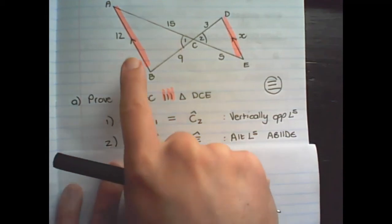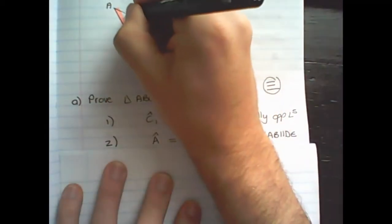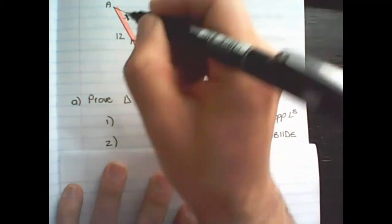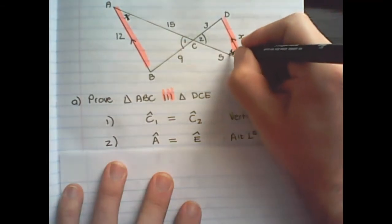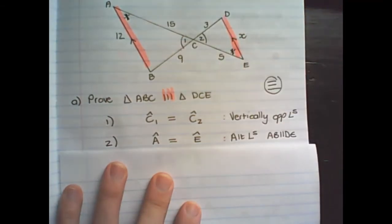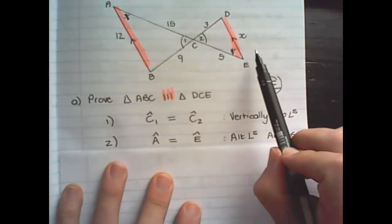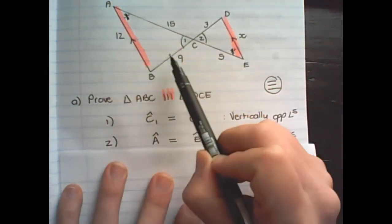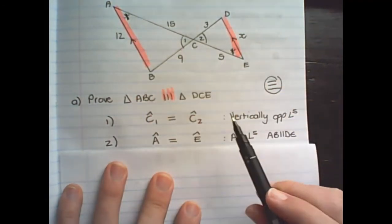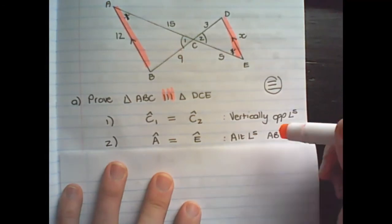Secondly we have angle A equal to angle E because they are alternate angles based on the parallel lines. And remember for alternate angles we need to say which lines are parallel to each other.